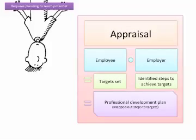In business it's pretty much the same. In order to help people reach their potential, they'll often have a sit-down meeting with their boss and it's called an appraisal. So the employee and the employer sit down and have a chat, and the outcome of that meeting will be to set some targets and then identify some steps to help them achieve those targets.